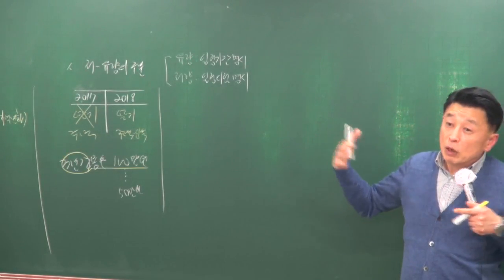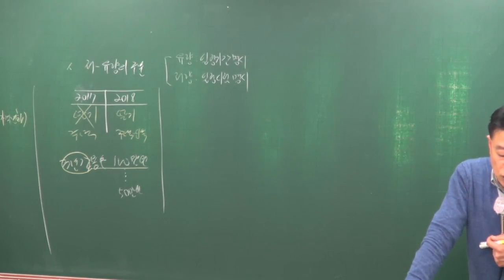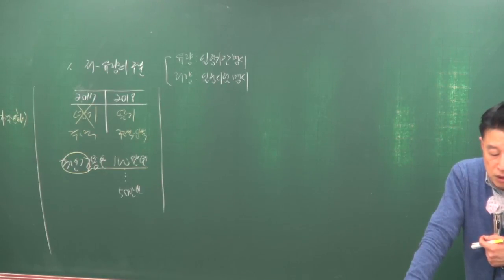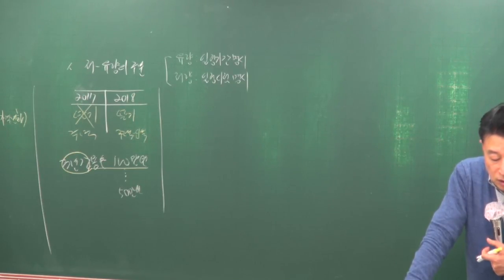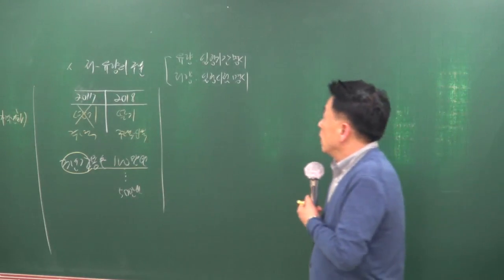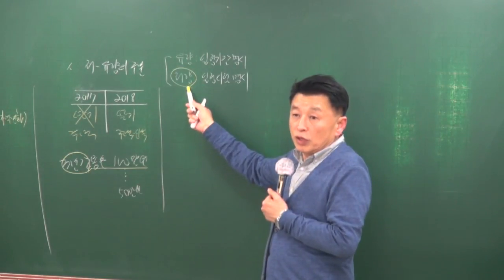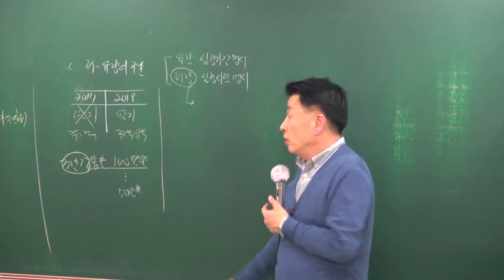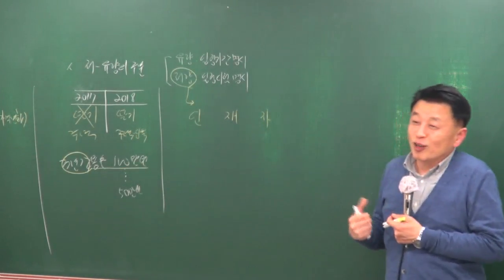저량과 유량에 관한 문제가 시험에도 출제된 바 있습니다. 1번 문제에서 유량과 저량의 설명으로 옳은 것을 물었는데, '저량은 일정한 기간을 정해야 측정 가능하고 유량은 일정 시점에서만 측정 가능하다'는 지문이 나왔습니다. 이는 유량과 저량의 표현이 서로 바뀐 오답입니다.